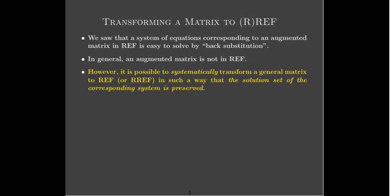So we can systematically start with the general matrix and transform it step by step in such a way that the solution set is preserved. In other words, the solution that you get from the transformed matrix is the same solution as you get from the original system of equations. We want to make sure that we're doing something systematically — that there is a clear path or algorithm for starting from a general matrix and getting to row echelon form or reduced row echelon form, and that it doesn't change the solution.